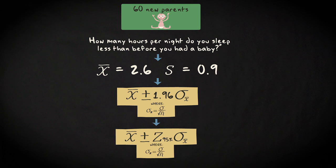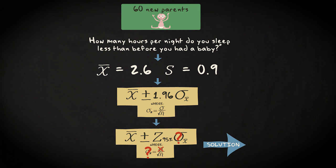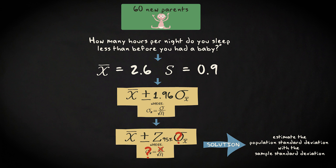As you can see, it is impossible to compute the confidence interval because we don't know the value of the population standard deviation. Therefore, we cannot compute the standard deviation of the sampling distribution of the sample mean. To solve that problem, we estimate the population standard deviation with the sample standard deviation.